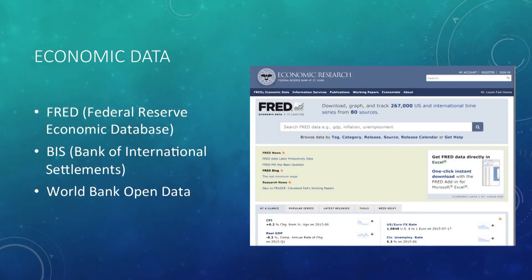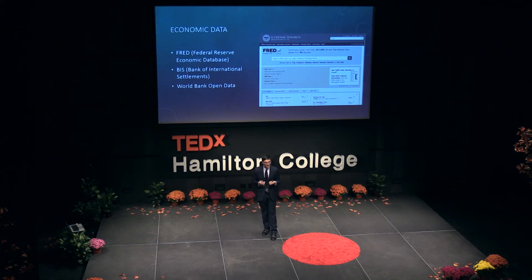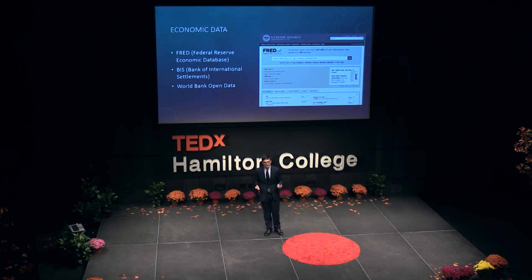First, we have economic data. This is a more traditional source of data from such places as the Federal Reserve, the Bank of International Settlements, or the World Bank. These data are monthly, quarterly, and weekly economic releases detailing the state of the US and world economy — things like inflation, unemployment, GDP, and sovereign debt — and can be used to take a look at larger-scale economic trends.